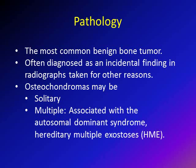For example, a child is running, hurts his knee, gets an x-ray, and then the x-ray reveals an osteochondroma of the distal femur. So most osteochondromas are actually asymptomatic and discovered as an accidental finding on radiographs taken for other reasons.